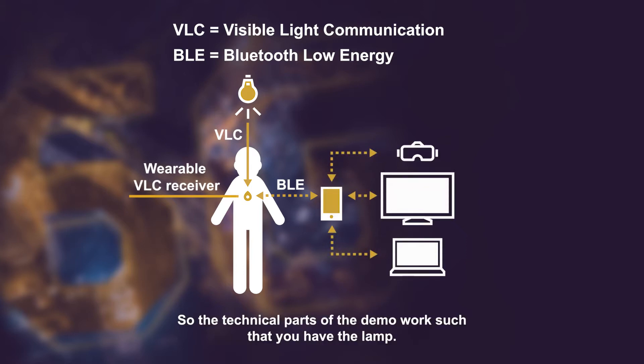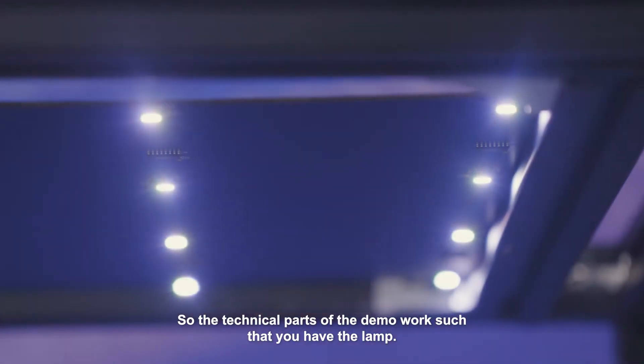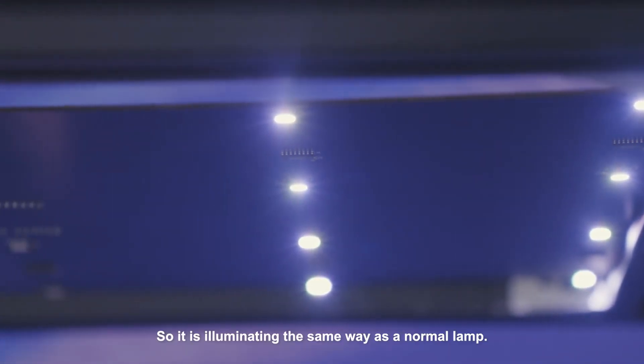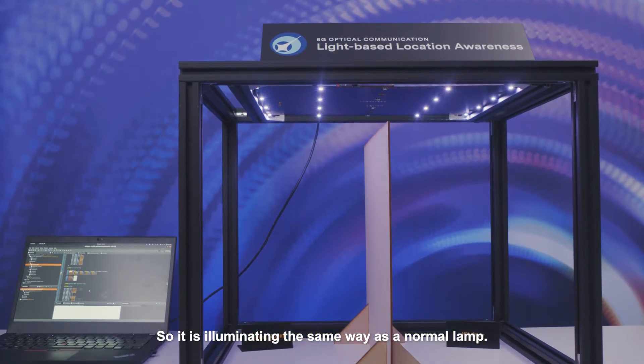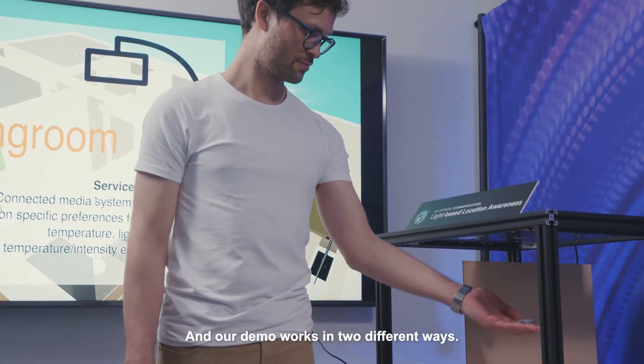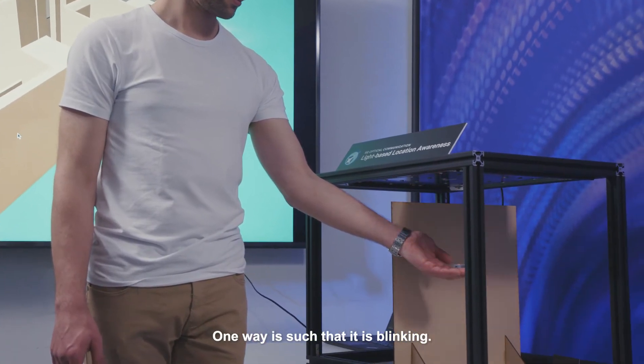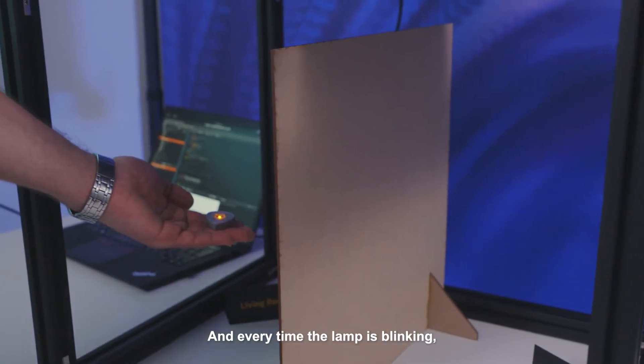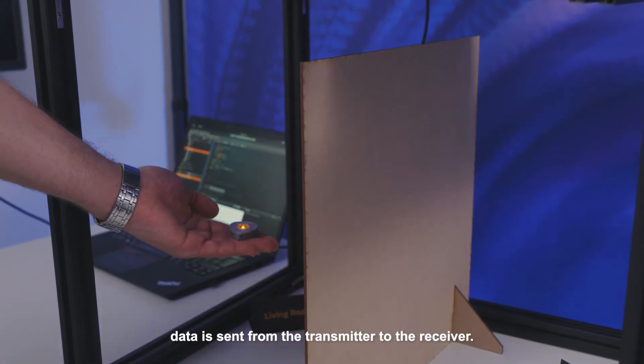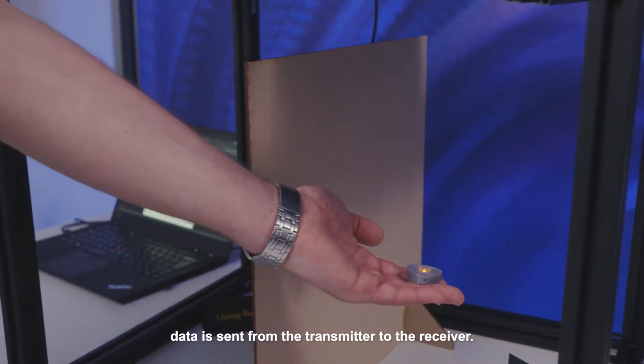So the technical parts of the demo work such that you have the lamp, so it is illuminating the same way as a normal lamp, and our demo works in two different ways. One way is such that it is blinking, and every time the lamp is blinking, data is sent from the transmitter to the receiver.